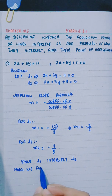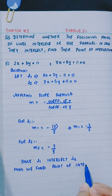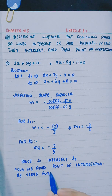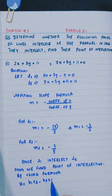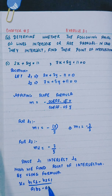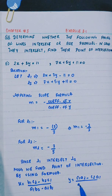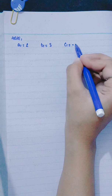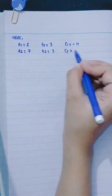We find the point of intersection by using the formula: x = (B1C2 - B2C1) / (A1B2 - A2B1) and y = (C1A2 - C2A1) / (A1B2 - A2B1). Here, A1 = 2, B1 = 3, C1 = -11, A2 = 7, B2 = 5, and C2 = 11.